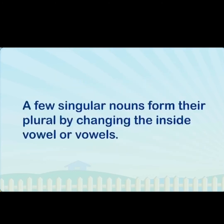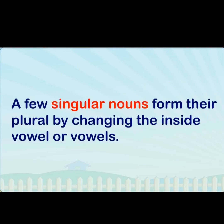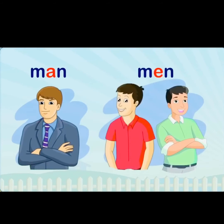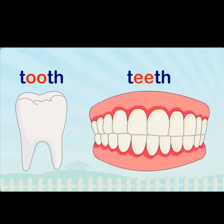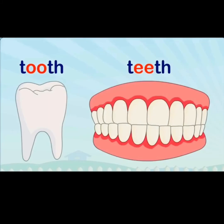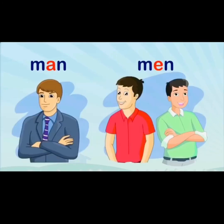A few singular nouns form their plural by changing the inside vowel. For example: man → men, tooth → teeth. Tooth means a single tooth and teeth means many teeth. I have changed the vowel o to e. Similarly in men, the vowel a changes to e, because man means one person and men means more than one.